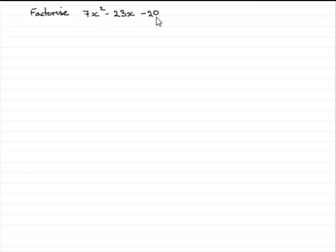So how do we factorize it? Well first of all, always look to see whether you've got a common factor. There is no number that goes into 7, minus 23, and minus 20 exactly, so no common factor.